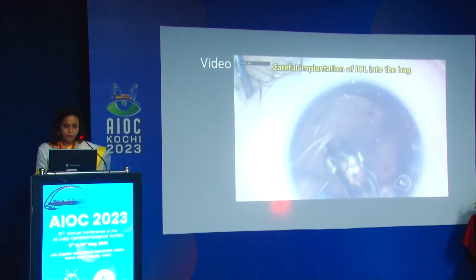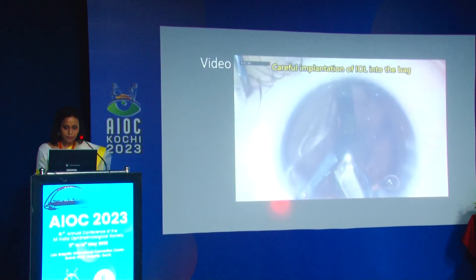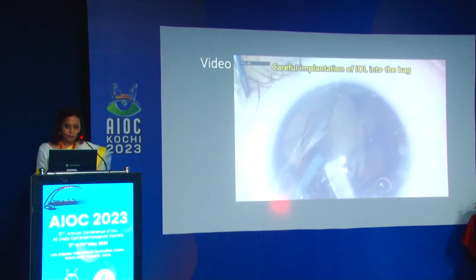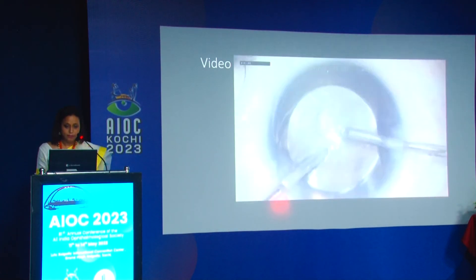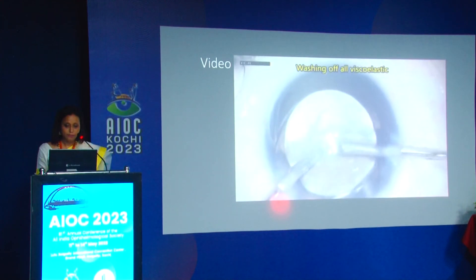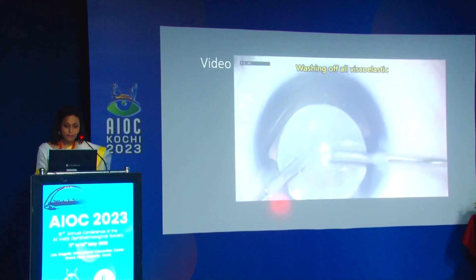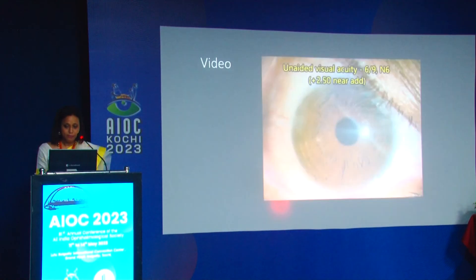Coming to the intraocular lens, it must be carefully implanted to ensure it does not touch the endothelium. We always use a hydrophobic acrylic IOL, because if endothelial keratoplasty is needed in the future, hydrophobic acrylic is the best material. Remove all viscoelastic thoroughly. This lady improved to 6/9 and 6/6.